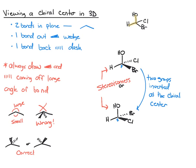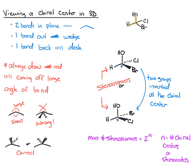We can use a simple calculation to figure out the maximum number of stereoisomers that you could potentially have. The calculation is 2 to the power of n, where n is the number of chiral centers. For this particular molecule, there's one chiral center, so we do 2 to the first equals 2 stereoisomers. As you gain in the number of chiral centers, the number of stereoisomers increases exponentially.